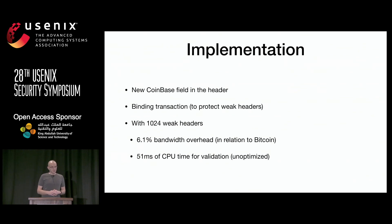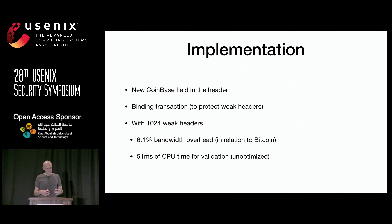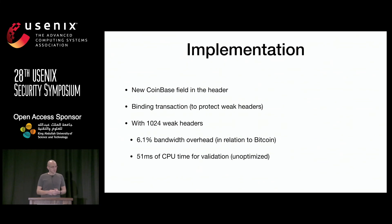We implemented our protocol. For efficiency we modified Bitcoin headers, adding a Coinbase address field and a binding transaction to protect integrity of weak headers. With 1024 expected weak headers per round — the number we suggest — the bandwidth overhead is about 6% relative to Bitcoin, and total CPU overhead is about 50 milliseconds to validate all headers.